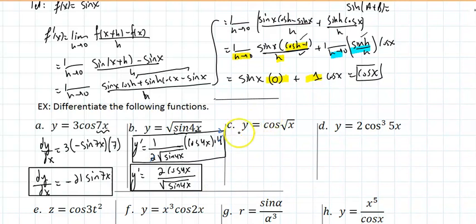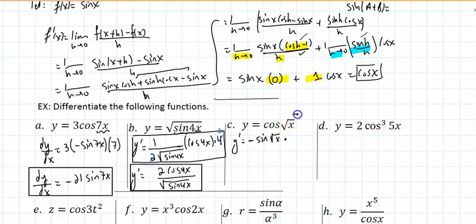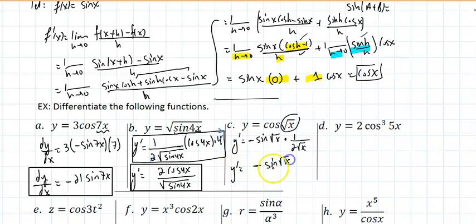For example (c), taking the derivative of y = cos(√x): y' = -sin(√x) times the derivative of √x by the chain rule, which is 1/(2√x). So the final answer is -sin(√x) / (2√x).